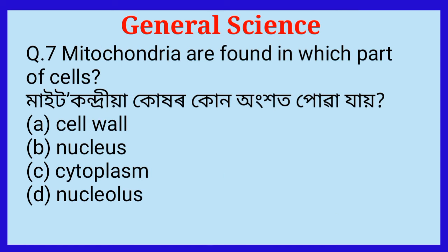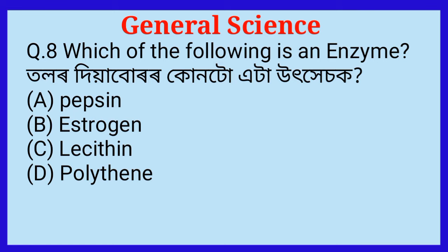Question number seven: Mitochondria are found in which part of cells? Mitochondria — in which part are they found? The answer is option C, cytoplasm. Question number eight: Which of the following is an enzyme? The answer is option A, pepsin.